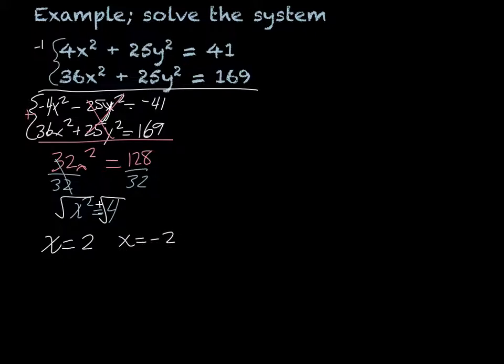For both instances, we have to find our y. So we need to, when x is 2, we need to put it in. So 4 times 2² + 25y² equals 41. It doesn't matter which equation you use.